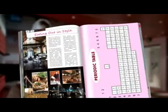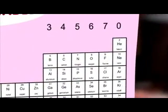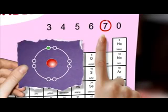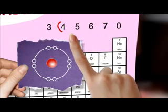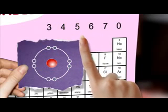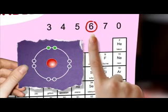Remember the periodic table? It gives the group number. If an atom is in group seven, then it's going to need eight minus seven equals one covalent bond — it's only got one gap in its highest energy level. The number of vacancies in the highest energy level is the number of covalent bonds an atom can make.